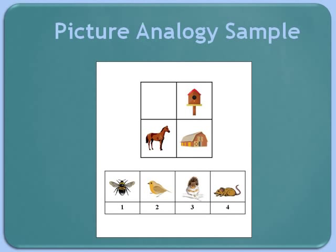Let's look at an example. In this exercise, we see a horse and a barn — these pictures are related to each other. To solve this exercise, the child must apply that relationship to the third picture and select an answer that should go in the empty box. The best way to solve this is to make up a sentence about the relationship: 'A horse lives in a barn. What lives in a birdhouse?' The best answer would be number two, a bird.